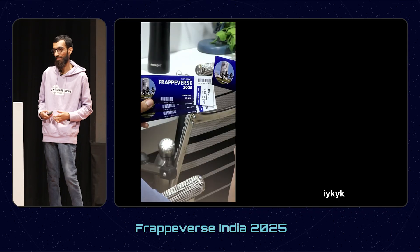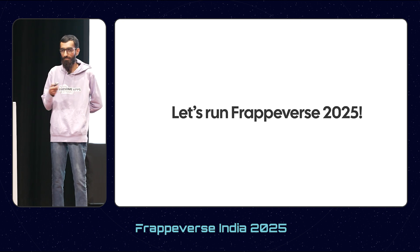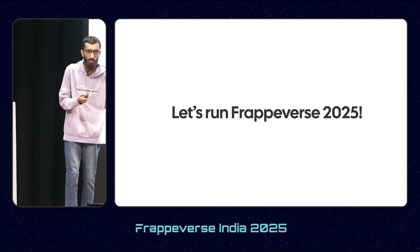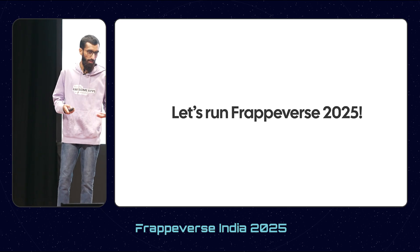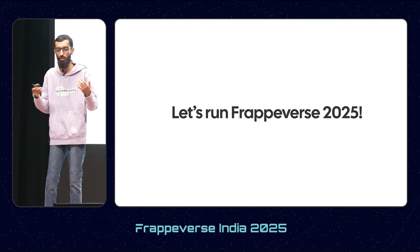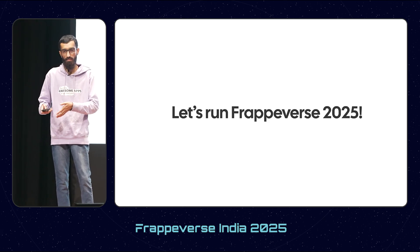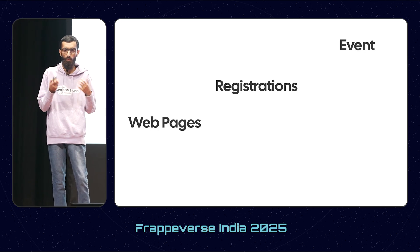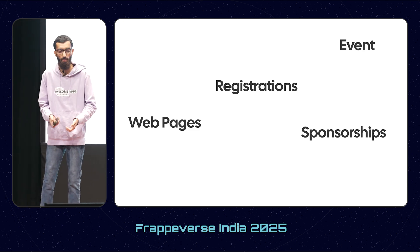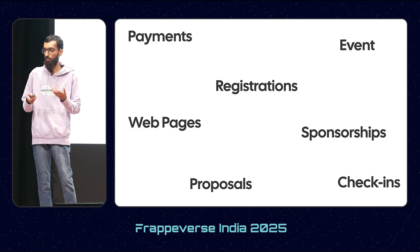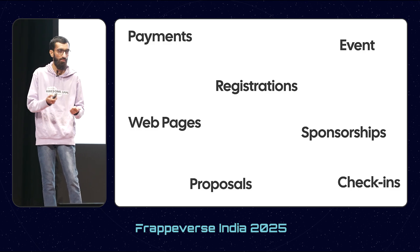So we finally managed to catch the thieves and get here — if you know, you know. Since this is Frapaverse, what do you think it takes to run an event like this? Where does it start? It starts way before even the registrations and payments. How do you decide the venue? There's even an event proposal. From there it goes to registrations, web pages for the event, the schedule, sponsorship management, coordinating with sponsors, taking payments, talk proposals, check-ins on the day of the event, add-ons — who is getting a t-shirt, who is getting a meal.